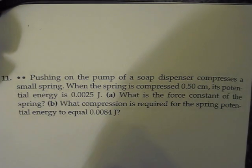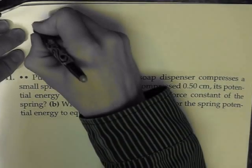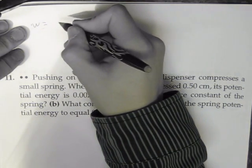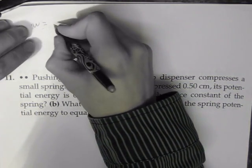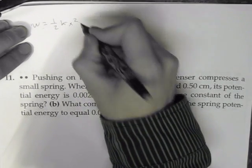So let's start with A. They're basically asking what the k value of the spring is, and we can easily find that out using work equals—well, the work is going to be the potential energy. And the potential energy of the spring, this is a formula you should know, is 1 half kx squared.